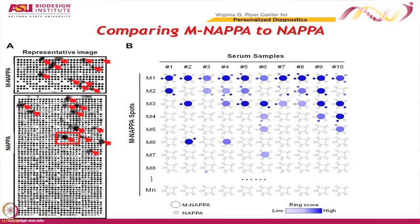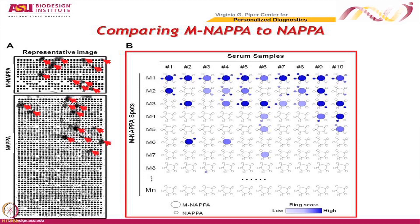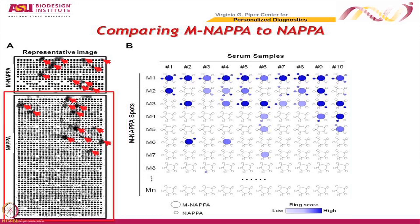For example, that ring right there would be like a five, whereas this one would probably be a one or a two. You can see the spot and a little bit of the ring here; this one is a five, it's spilling all over; this might be a three. You get used to it after you do a lot of these. Each column is a serum sample, each row is a multiplex spot, and the little nodes around it indicate which proteins were individually detected.